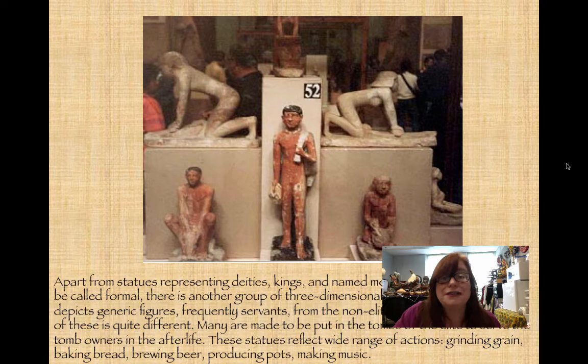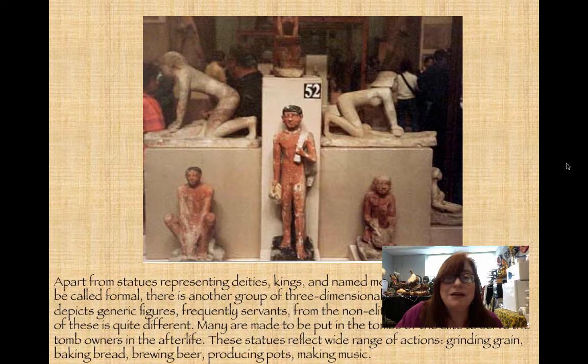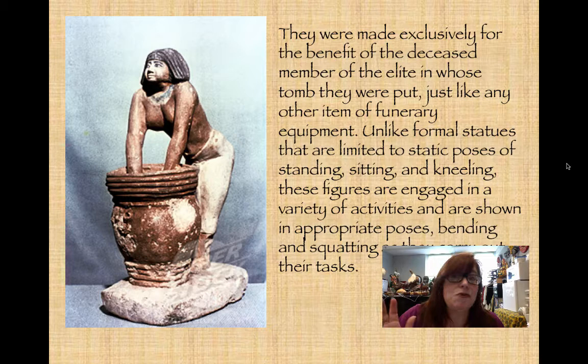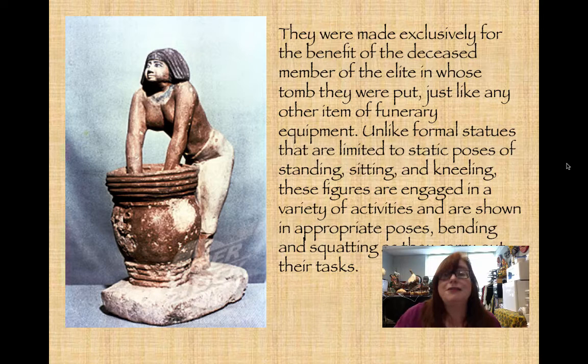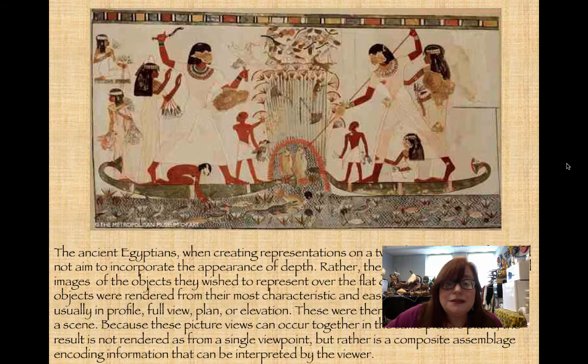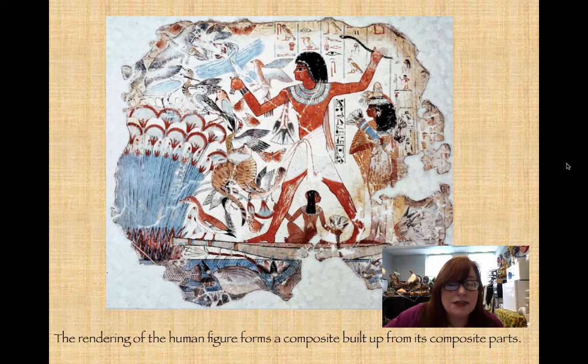People in these images are shown doing all kinds of things — making bread, grinding grain, pounding things in a mortar, baking, making pots. These are all things the king would need to continue in the afterlife. These servant figures were made exclusively for the elite and are not limited to standing, sitting, or kneeling — they are fully three-dimensional and shown able to carry out the tasks needed.